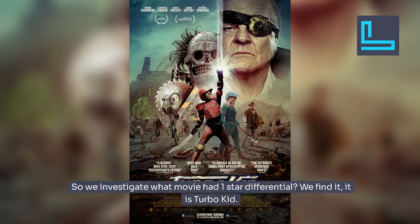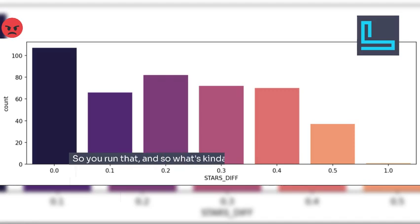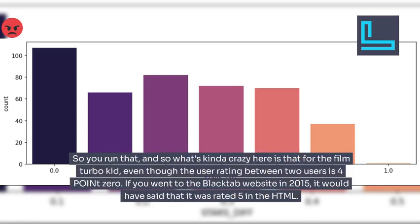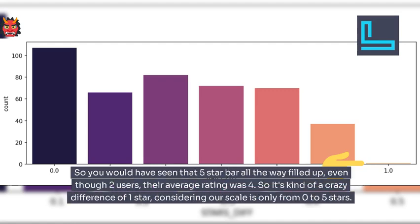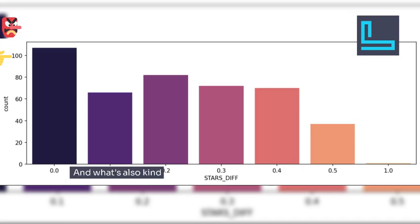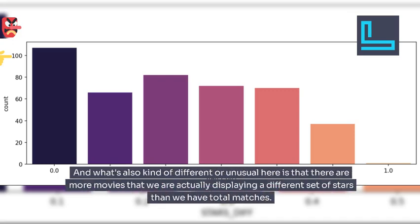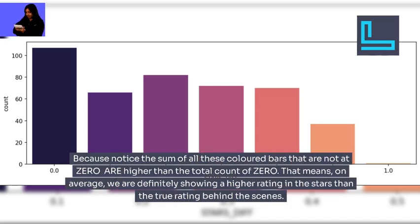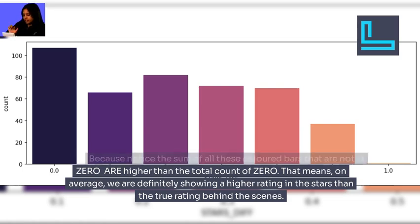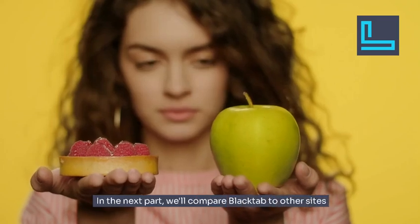We investigate what movie had a one-star differential and find it is Turbo Kid. For Turbo Kid, even though the user rating between two users is 4.0, if you visited the Blacktab website in 2015 it would have said it was rated 5 in the HTML — a full 5-star bar — even though the average rating was 4. What's also notable is that there are more movies displaying a different star count than there are total matches at zero difference. On average, Blacktab is definitely showing a higher star rating than the true rating behind the scenes.